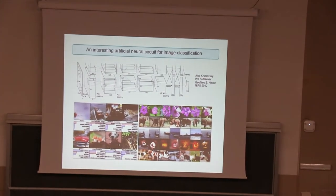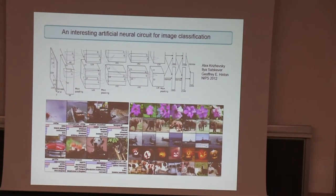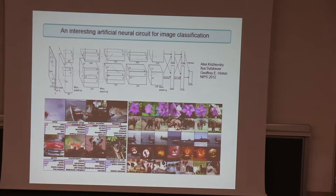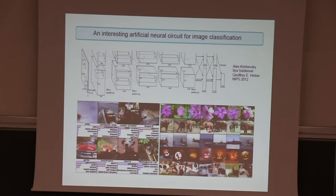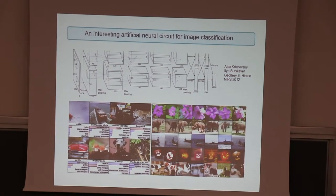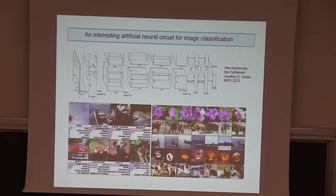Deep learning has achieved profound empirical success in a whole range of domains. Here's an example of pattern recognition and machine vision: a complicated deep neural network that takes as inputs pixels and outputs class labels, detecting different types of classes of objects — the famous ImageNet network.